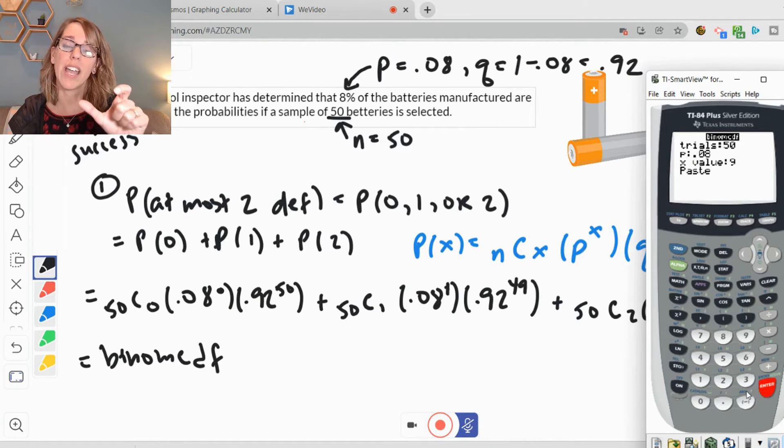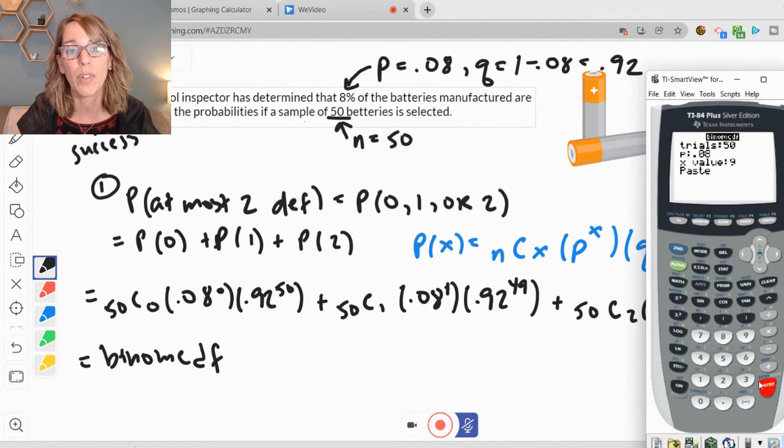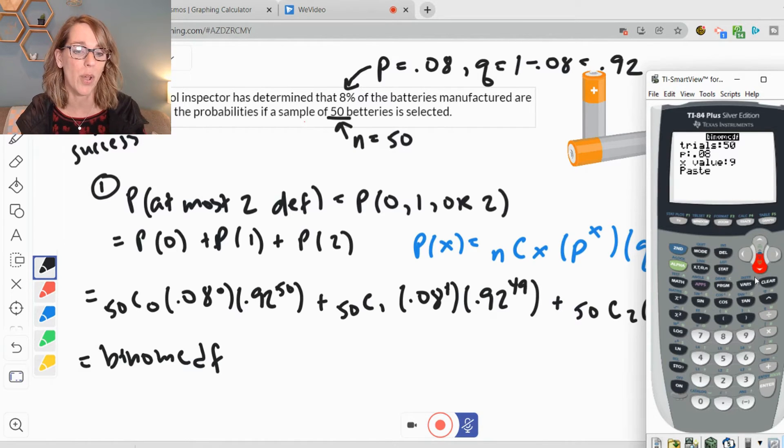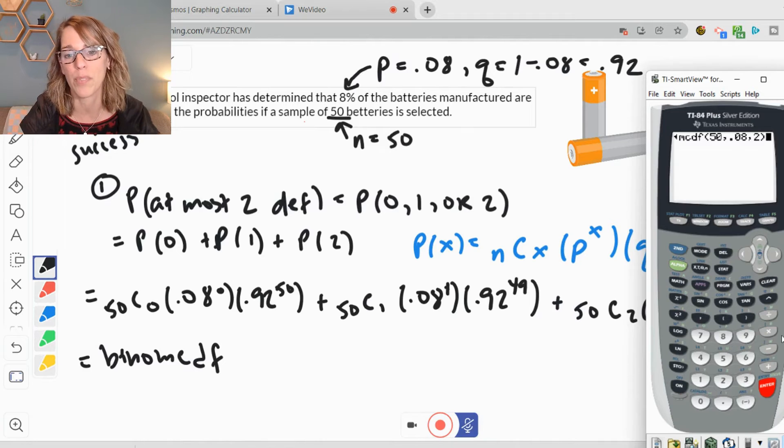If your calculator just has binomial CDF and then the parenthesis, don't worry, my next screen will look exactly like yours. But if yours looks like mine, I'm going to go ahead and type in. It looks like I've got just about everything there. 50 trials. P is 0.08. But my x value for the cumulative probability, which is cases, this is going to be 0 up to a number. So I want 0 up to 2 as my max number of cases. And then I go ahead and hit enter. This is what your calculator will look like if you didn't have the menu prompts. So I'm going to use the comma, which is right above the number 7, to put those parameters into the function. 50, 0.08, and then 2 is up to. Let's go ahead and hit enter.